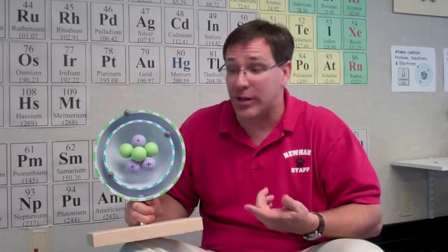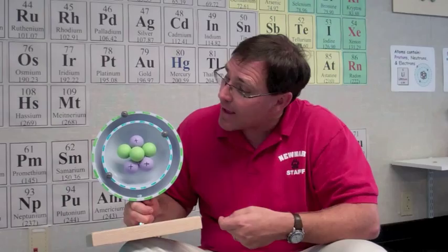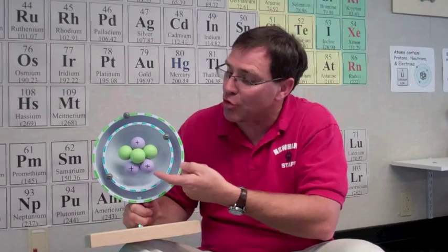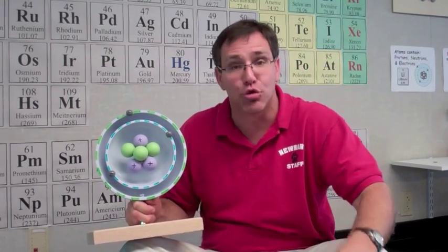Now we look at outside the nucleus. Here we have the electrons. The electrons have a negative charge. And normally you have the exact same number of electrons as you do the protons, giving the entire atom a neutral charge.